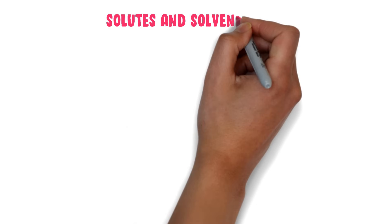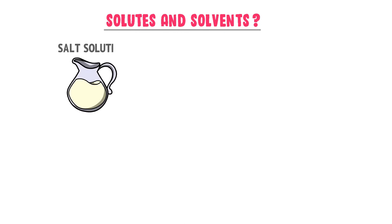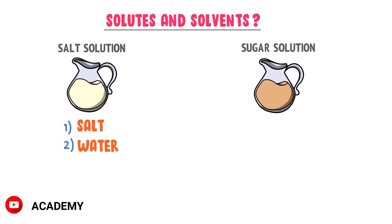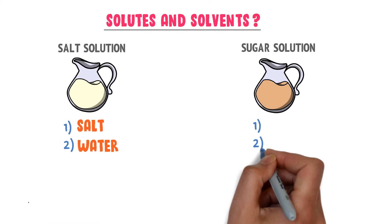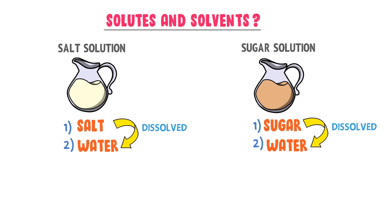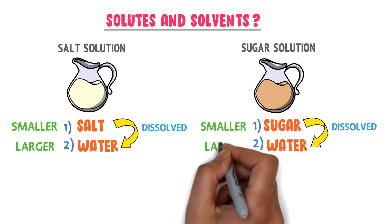Now what are solutes and solvents? Consider a salt solution and a sugar solution. In a salt solution, there are two components: salt and water. While in sugar solution, there are also two components: sugar and water. In salt solution, salt is dissolved in the water, and salt is present in smaller quantity while water is present in larger quantity. While in sugar solution, sugar is present in smaller quantity and water is again present in larger quantity.